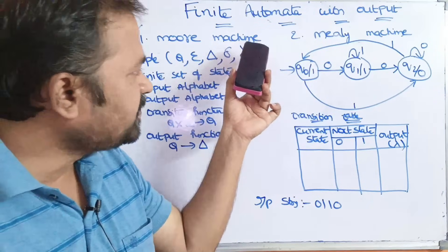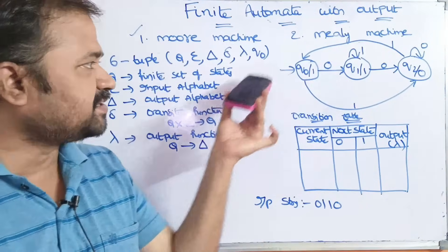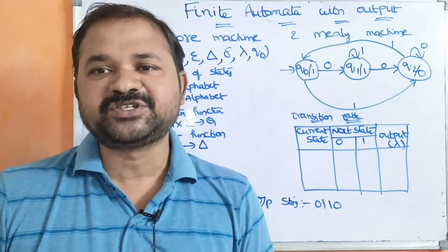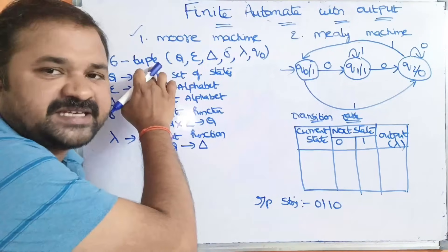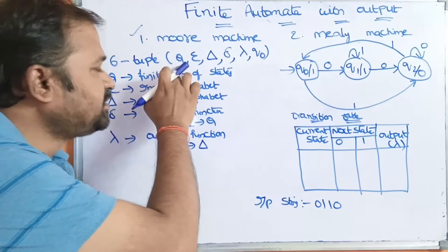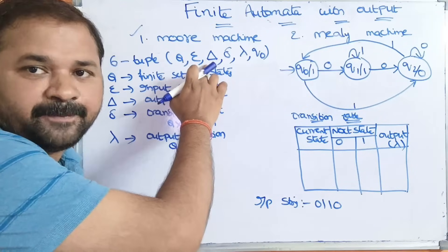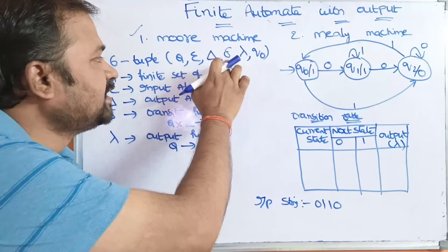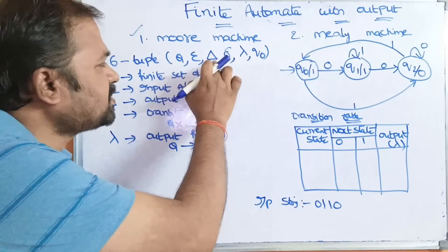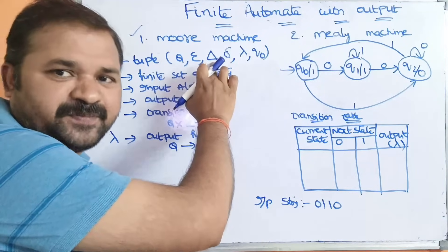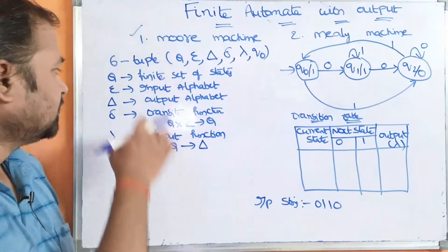The best examples are Moore machine and Mealy machine. First let us see about Moore machine, and after that we will discuss about Mealy machine. Moore machine is represented by a 6-tuple: Q, sigma, delta (output alphabet, let's call it big delta), transition function delta, lambda, and Q-naught. To show the difference between these two delta symbols, let us assume this one is big delta. We can pronounce both as delta — there is no problem.